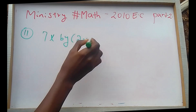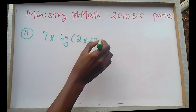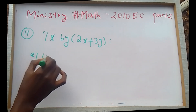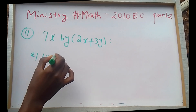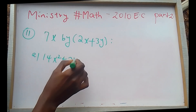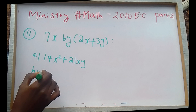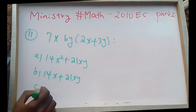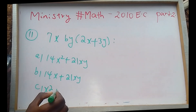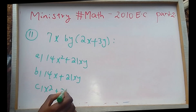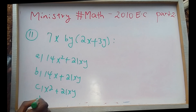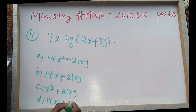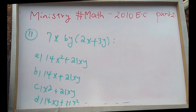2x plus 3y — we are finding the product. 7x times (2x + 3y) gives us 14x squared plus 21xy.